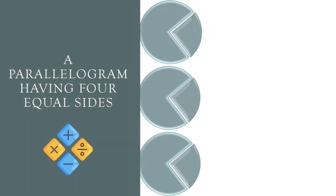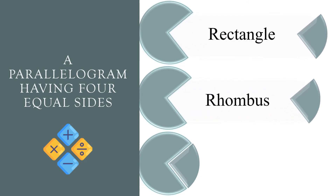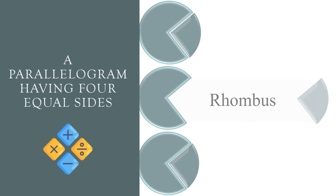A parallelogram having four equal sides. Rectangle, rhombus, or trapezoid? The correct answer is rhombus.